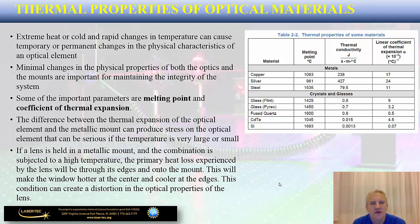If a lens is held in a metallic mount and the combination is subjected to high temperature, the primary heat loss experienced by the lens will be through its edges and onto the mount. This will make the lens hotter at the center and cooler at the edges. Not only does this introduce stress, but this condition can also create distortion in the optical properties, significantly impacting the performance of your optical system.